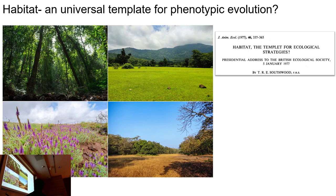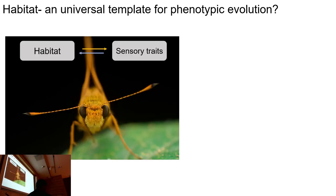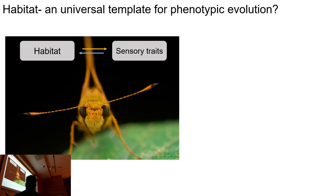Habitat is interesting because the light environment varies, especially when we talk about sensory traits, and it can affect so many physical and biological properties that can have a big impact on phenotypic evolution. Sensory traits are particularly quite interesting because, apart from the brain, sensory traits can be one of the most costly tissues to invest in — they need a lot of neurons and a lot of neurological processing. So you should invest in those traits only if you require them.